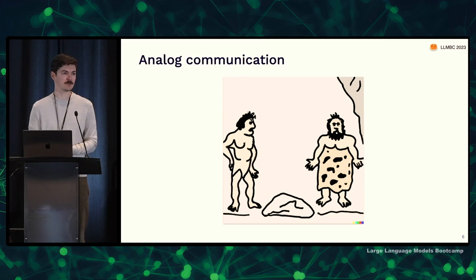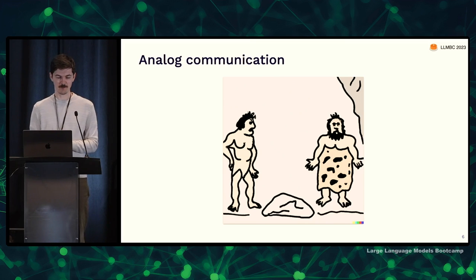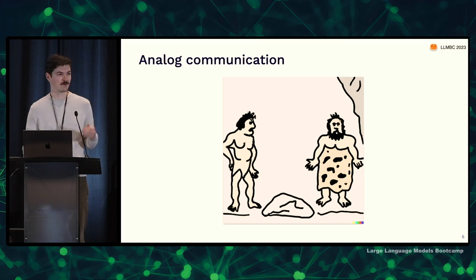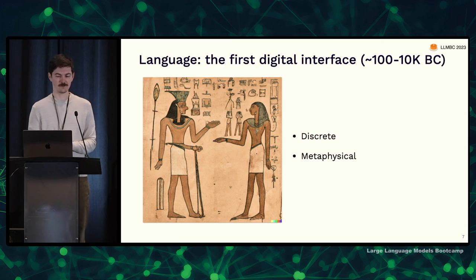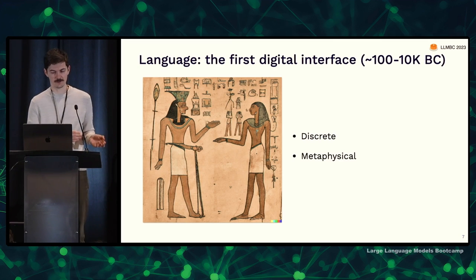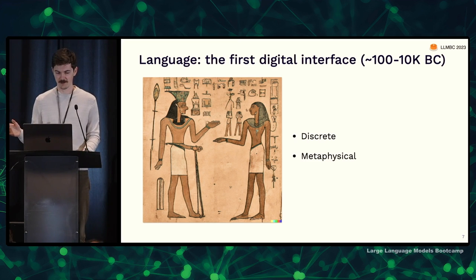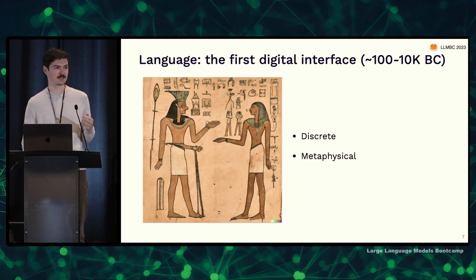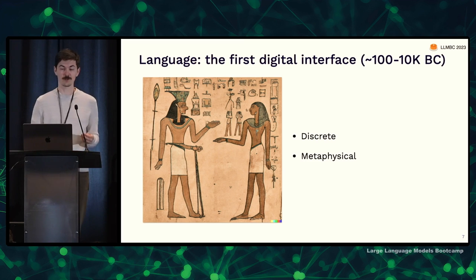Even communication has been analog. Before language was invented, if you really wanted something, you'd maybe grunt louder, get angrier, or something like that. And language is really the first digital interface. By digital, I mean it's discrete and it's no longer physical — it's actually metaphysical, symbolic. Language was followed quickly by writing, and I think that's useful as the first digital interface.